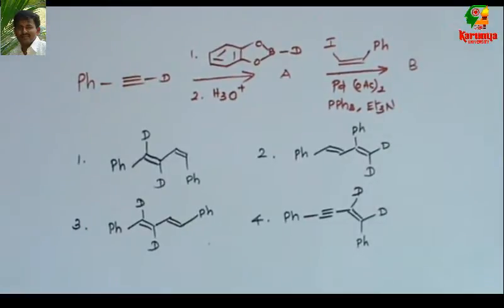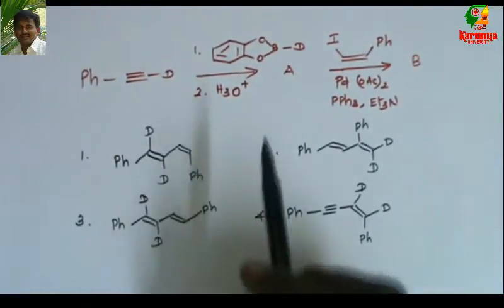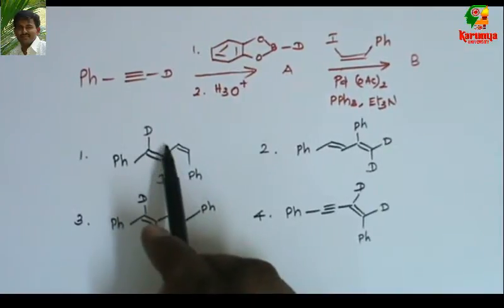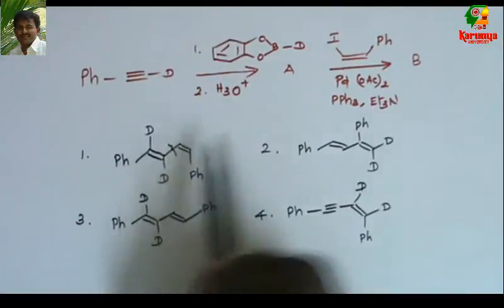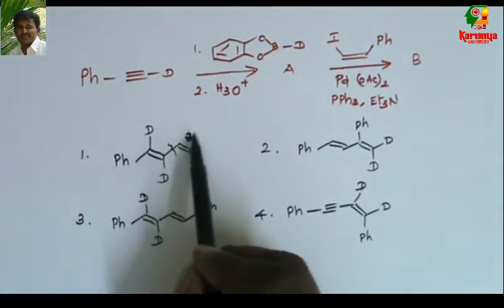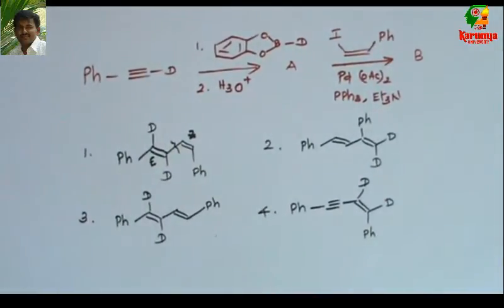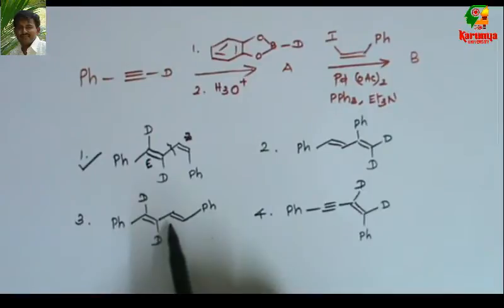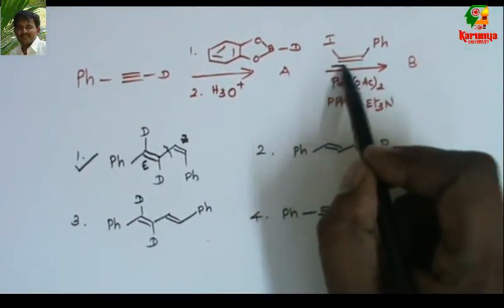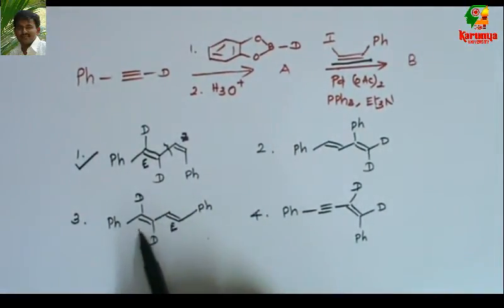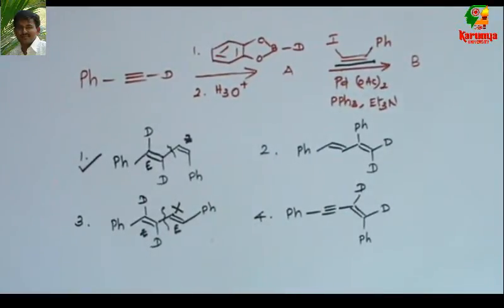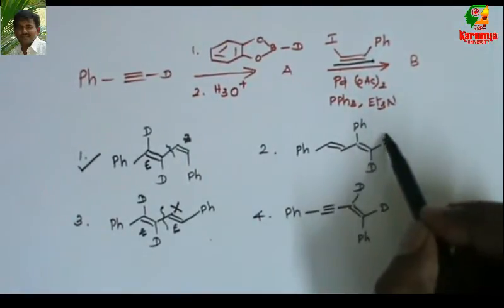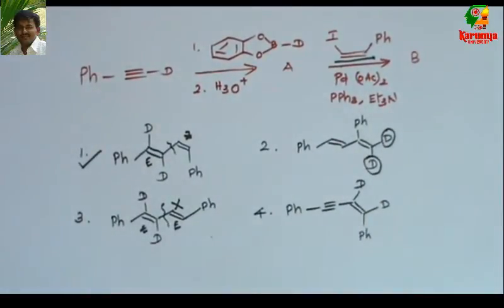Now let us look at the given options. In the first option, from hydroboration D2 and boron are on the same side, and from the vinyl iodide — since it is Z — that stereochemistry is also retained. So this double bond will be E and this one Z. This matches the product we derived from the mechanism. In the third option, the stereochemistry is reversed: this one is Z but the other is E, so that is not possible. The second and fourth options are entirely different — the deuterium is placed at the end — so those are not possible either.